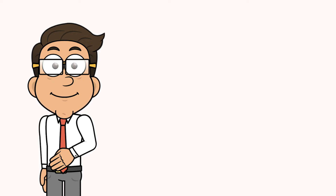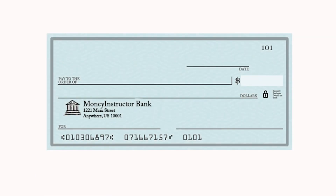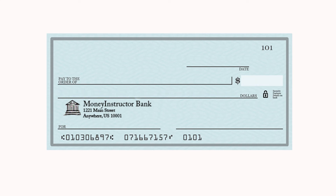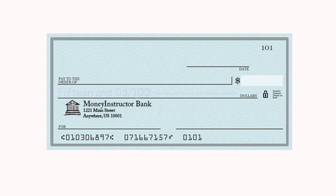Let's try some other examples. Write a check for $20.95. Next, write a check for $15.03. Next, write a check for $6. You can use either one or two zeros here, but we recommend using two zeros.